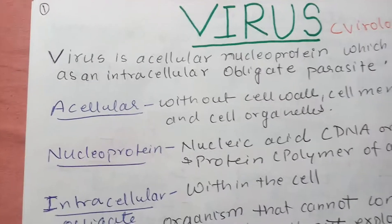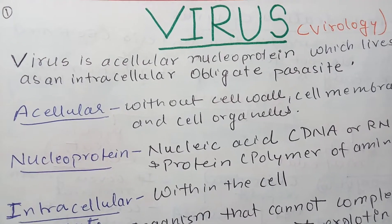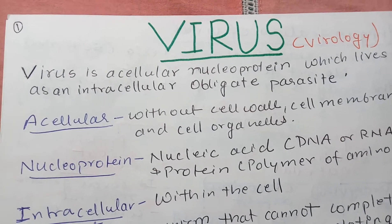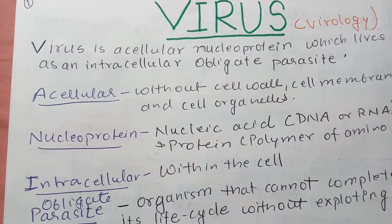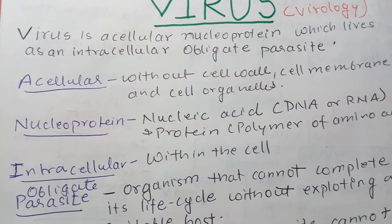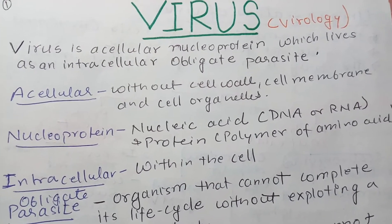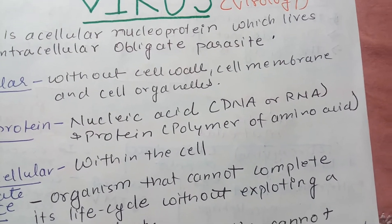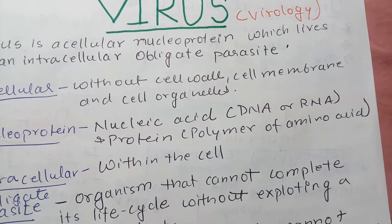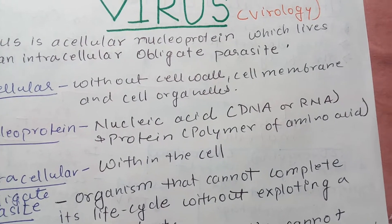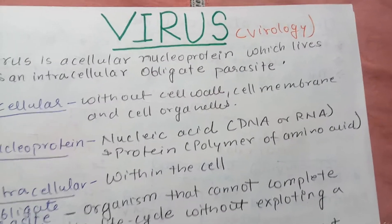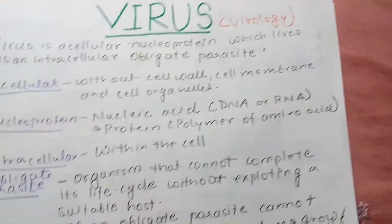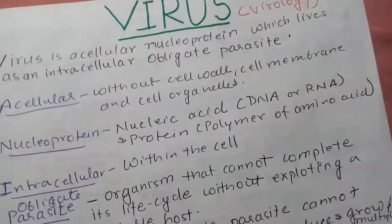Now what does this mean? Acellular means without cell wall, cell membrane and cell organelles — that is, no cell is present. Nucleoprotein means a combination of nucleic acid, which may be DNA or RNA, and protein. Proteins are polymers of amino acids, and different combinations of amino acids form different types of proteins.